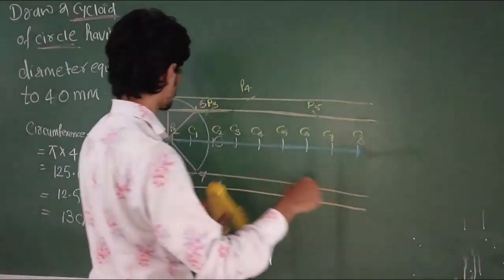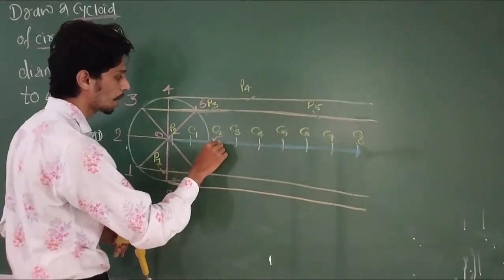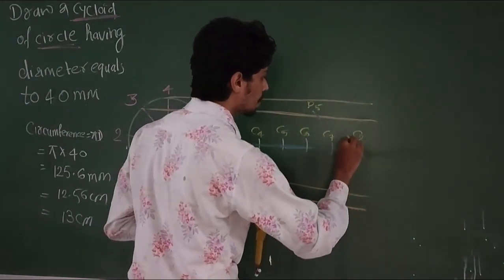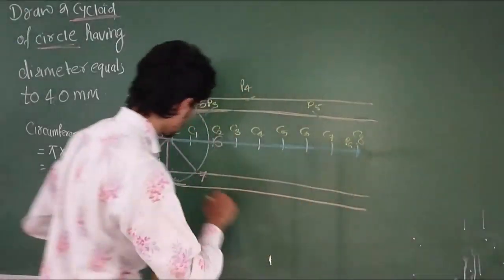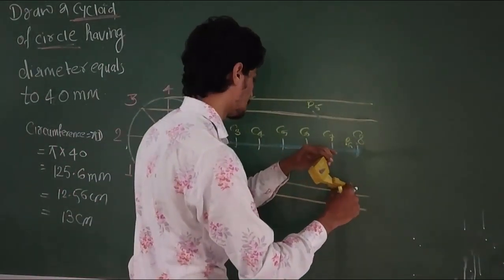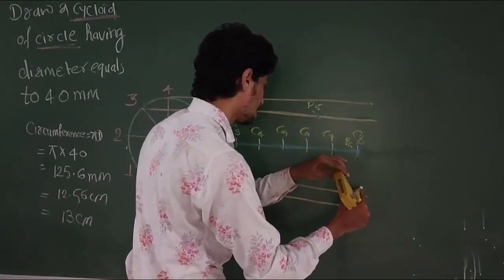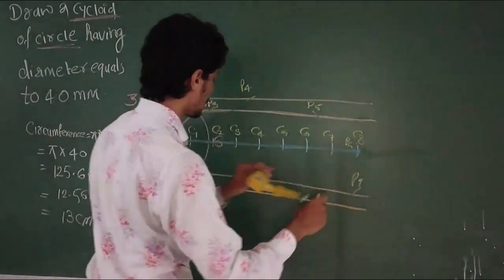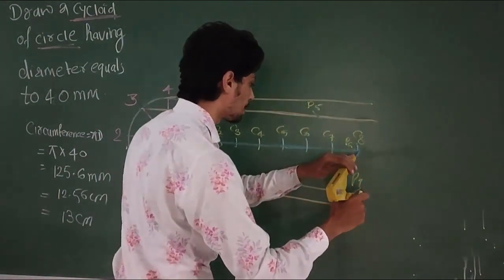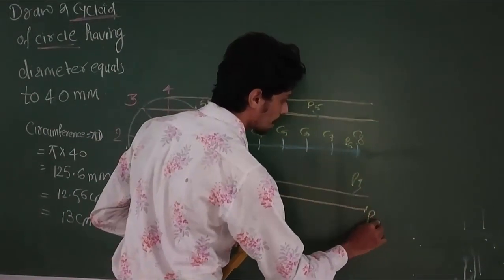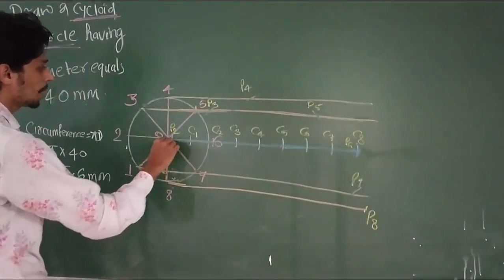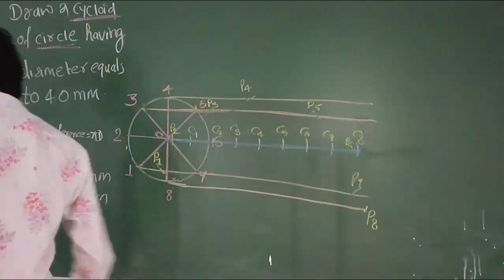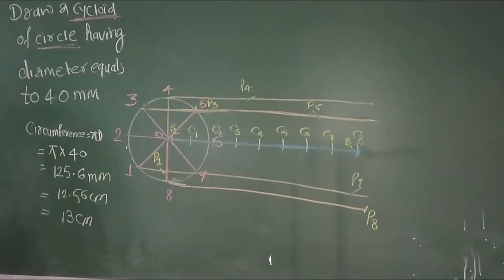From C5, draw arc with radius R to get P5. P6 point: from C6, draw arc to line 6 to get P6. From C7 to line 7, we get P7. And last line gives P8.